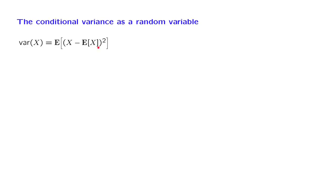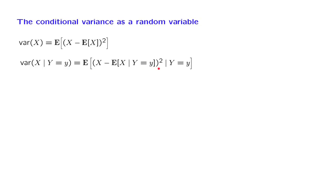If we live in a conditional universe where we are told the value of some other random variable capital Y, then inside that conditional universe, the variance becomes the following. It is defined the same way. In the conditional universe, this is the expected value of X, so this quantity here is the deviation of X from its expected value in that conditional universe. We square this quantity, find the square deviation, and look at the expected value of that square deviation. Because we live in a conditional universe, this expectation has to be a conditional one given the information that we have available.